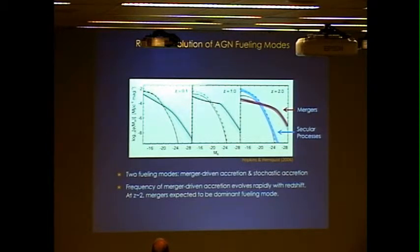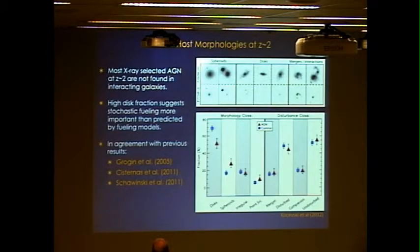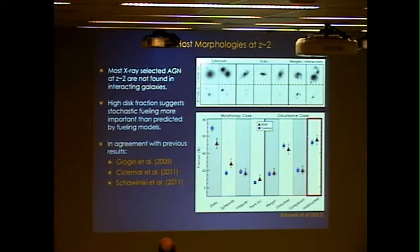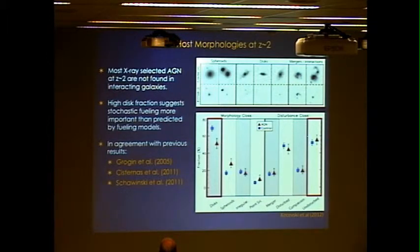This is actually what we don't find with CANDELS. When we look at the morphologies of AGN hosts at the knee of the luminosity function at redshift two, we find no excess of merger activity relative to a control sample. Almost 60% of the AGN hosts are undisturbed to the depth of the WFC3 imaging, and about half are located in undisturbed disks. This 50% disk fraction constrains that about half of the AGN hosts have not experienced a major merger in the recent past.